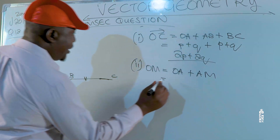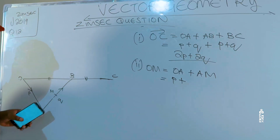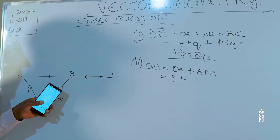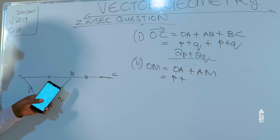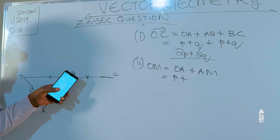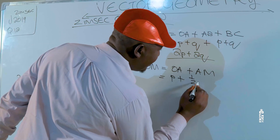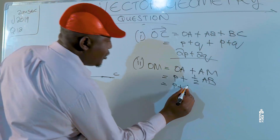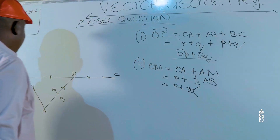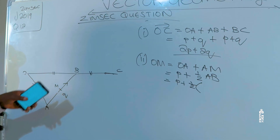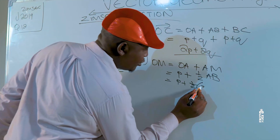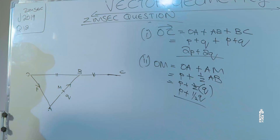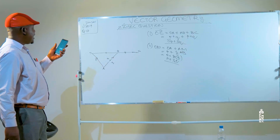OA is P, plus AM. Remember, M is the midpoint of AB, so AM is going to be half of AB. So we have P plus a half of AB. AB is Q, so this gives us P plus half Q. Vector OM is equal to P plus half Q.